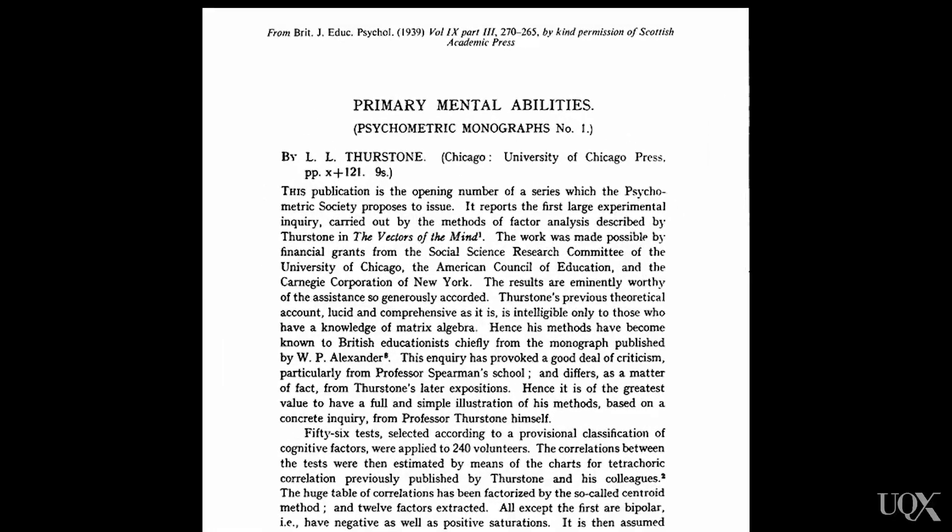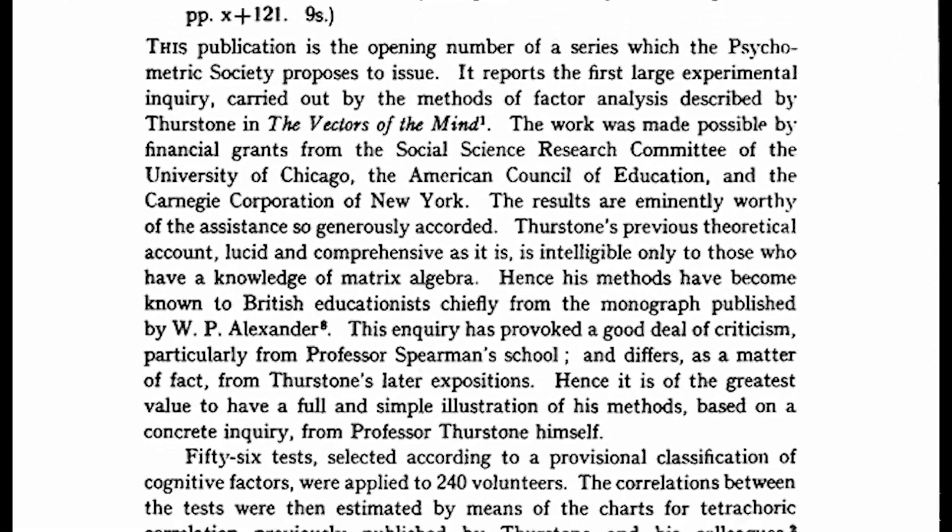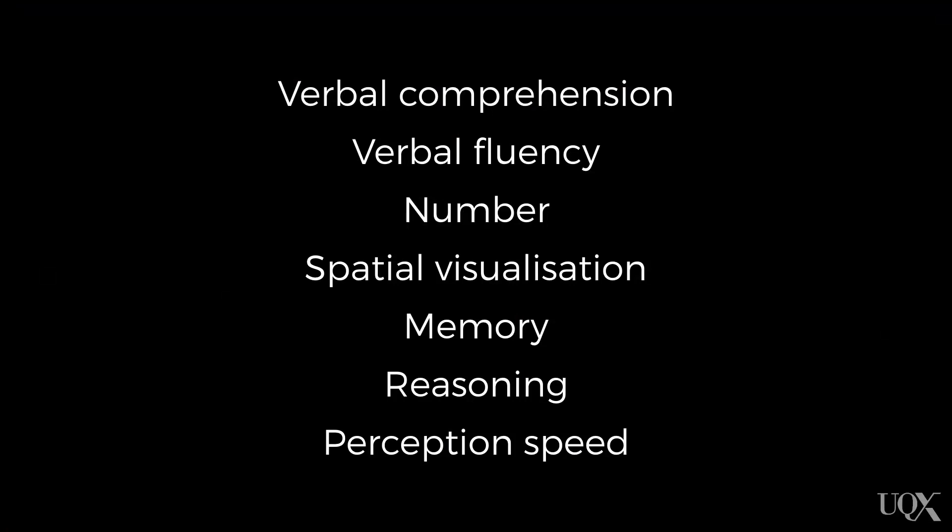In 1938, Thurstone conducted a factor analysis of 56 tests to determine the nature of intelligence. Instead of two-dimensional space like the example before, imagine 56-dimensional space and doing a factor analysis on that. Thurstone found seven factors underlying intelligence from the 56 tests. These factors included verbal comprehension, verbal fluency, number, spatial visualisation, memory reasoning, and perception speed. Therefore, the conclusion at the time was that there were seven discrete aspects to intelligence.